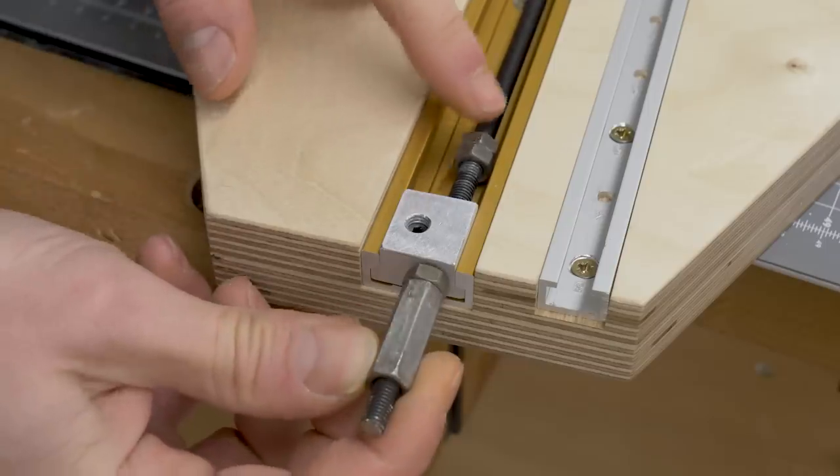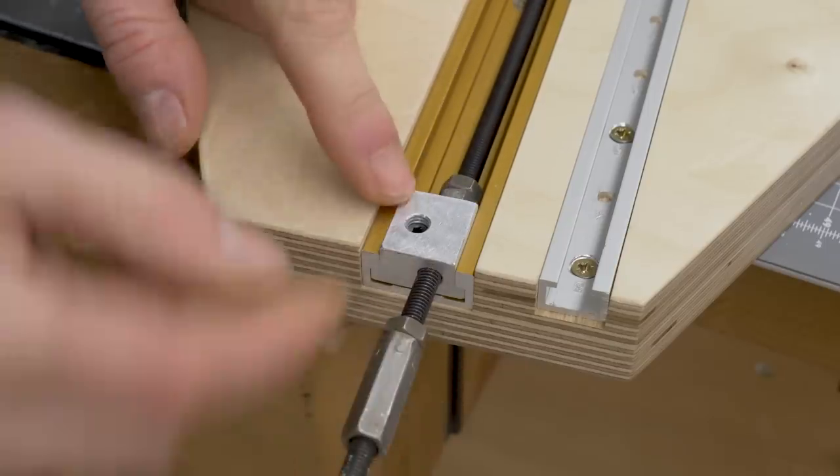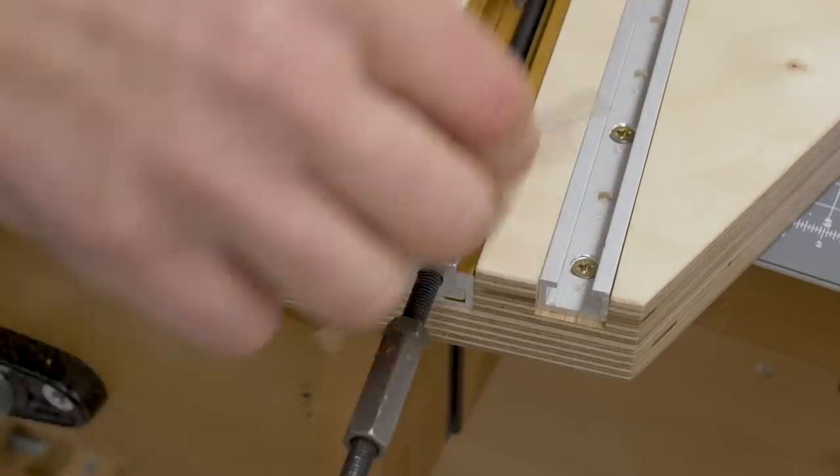On the side where I have to turn the rod, I installed a T-slot nut like the two previous ones and two nuts that also act as stops.